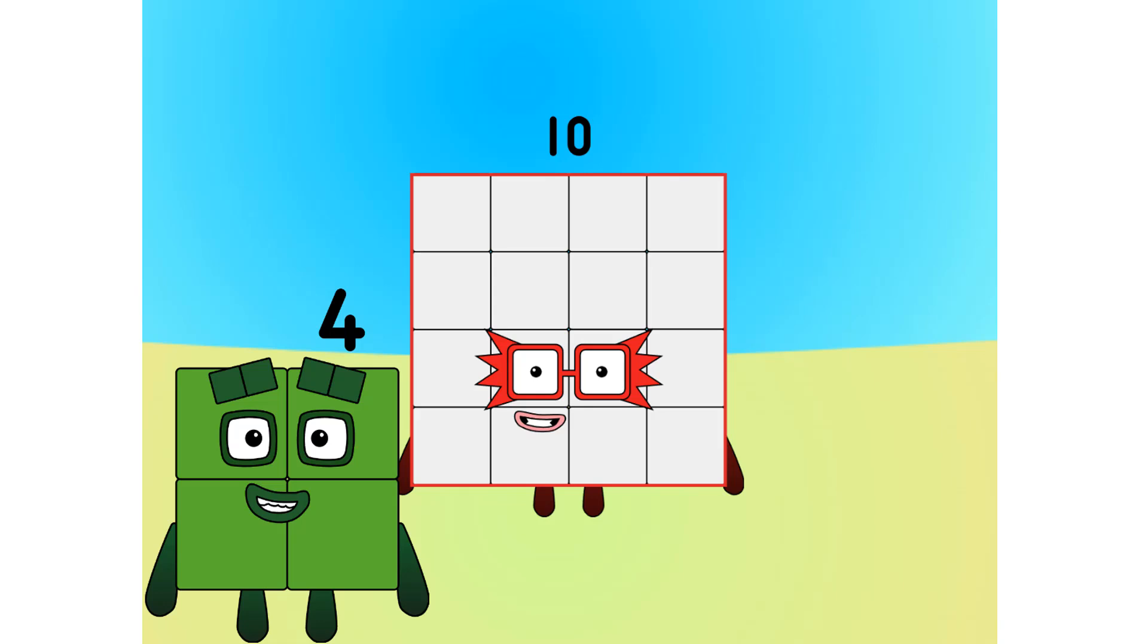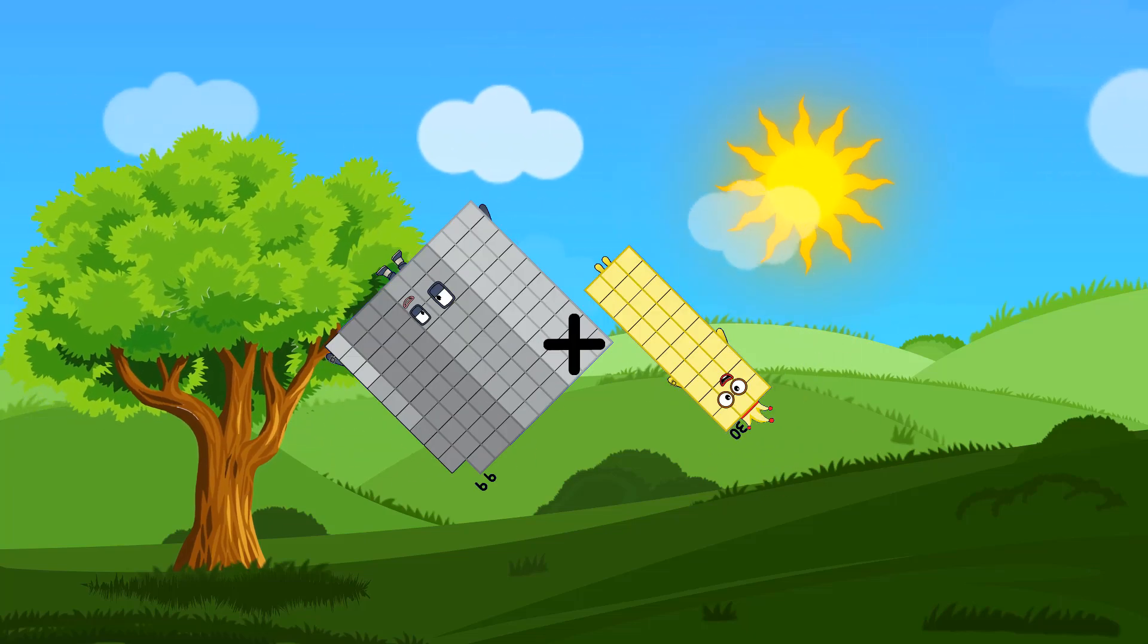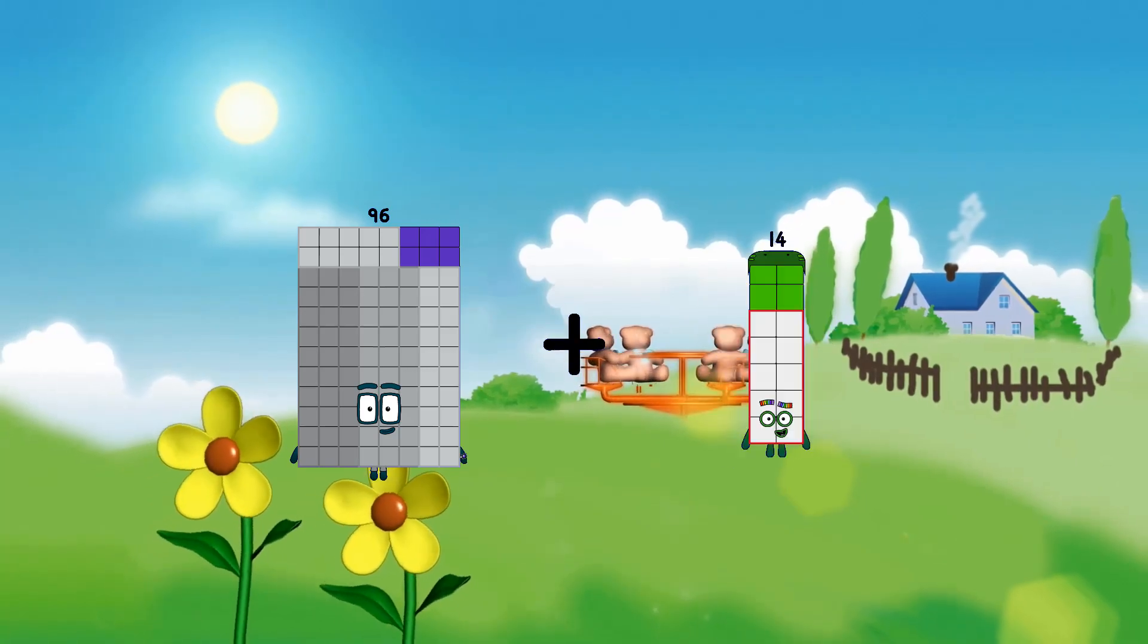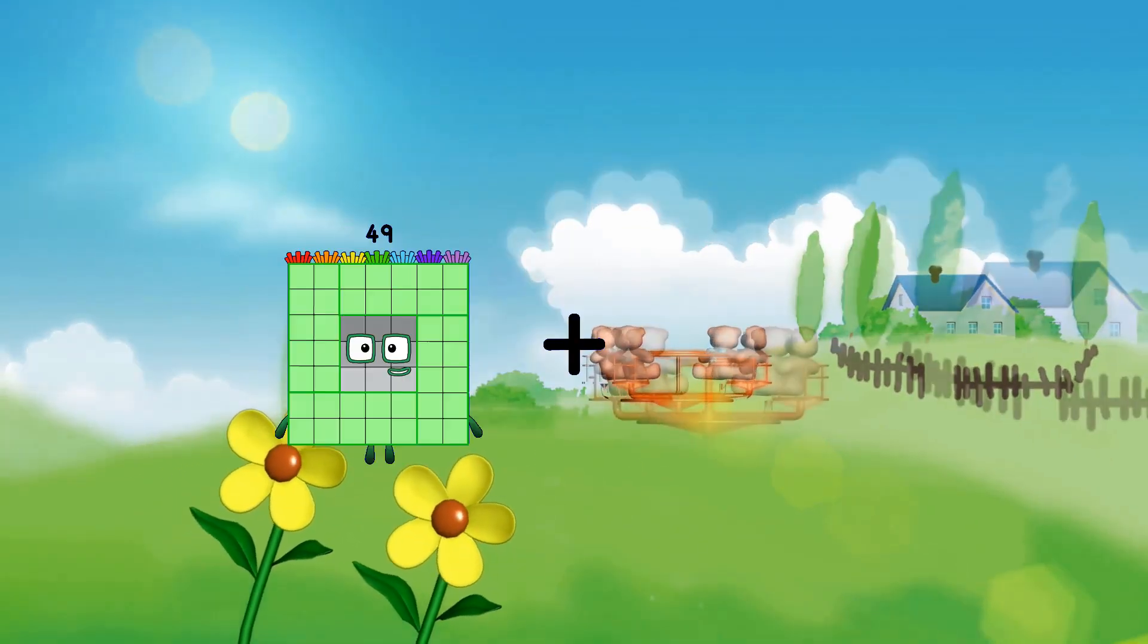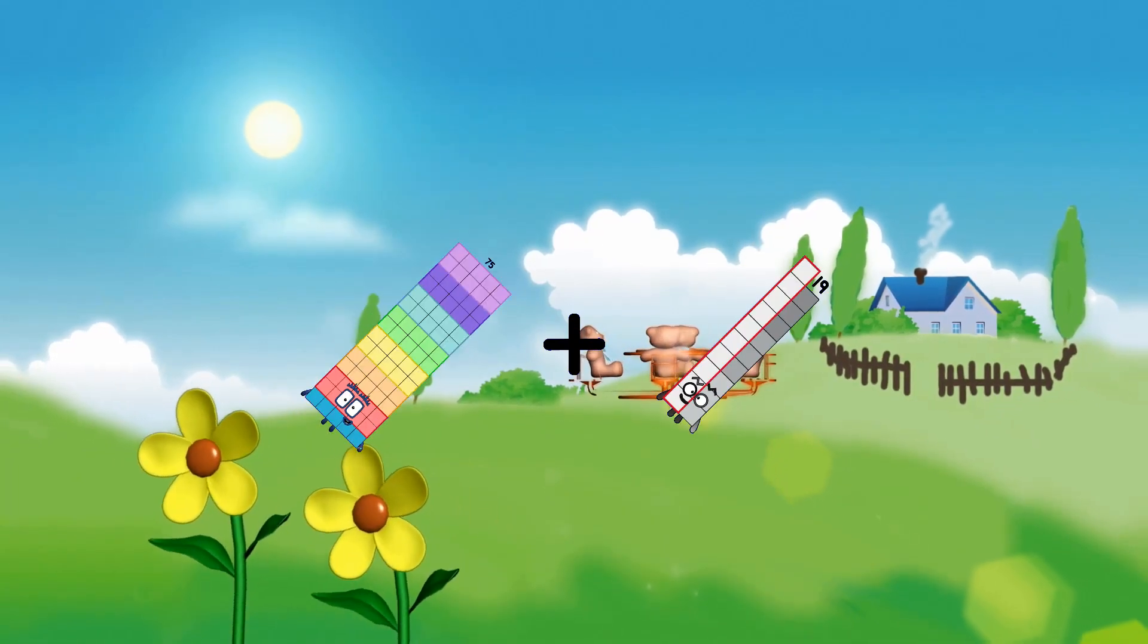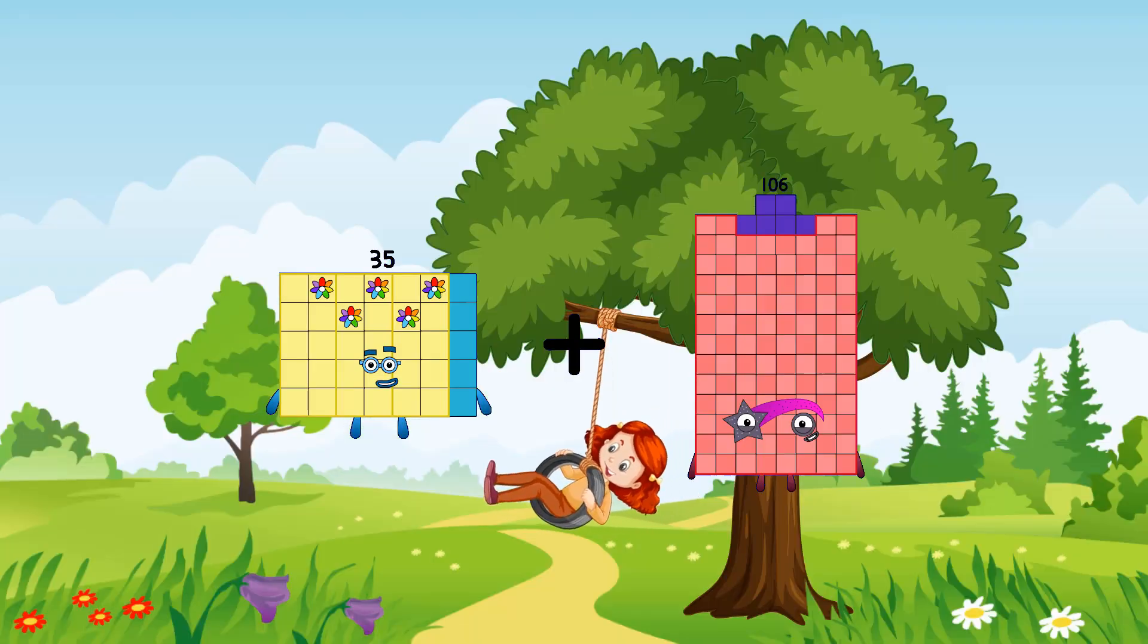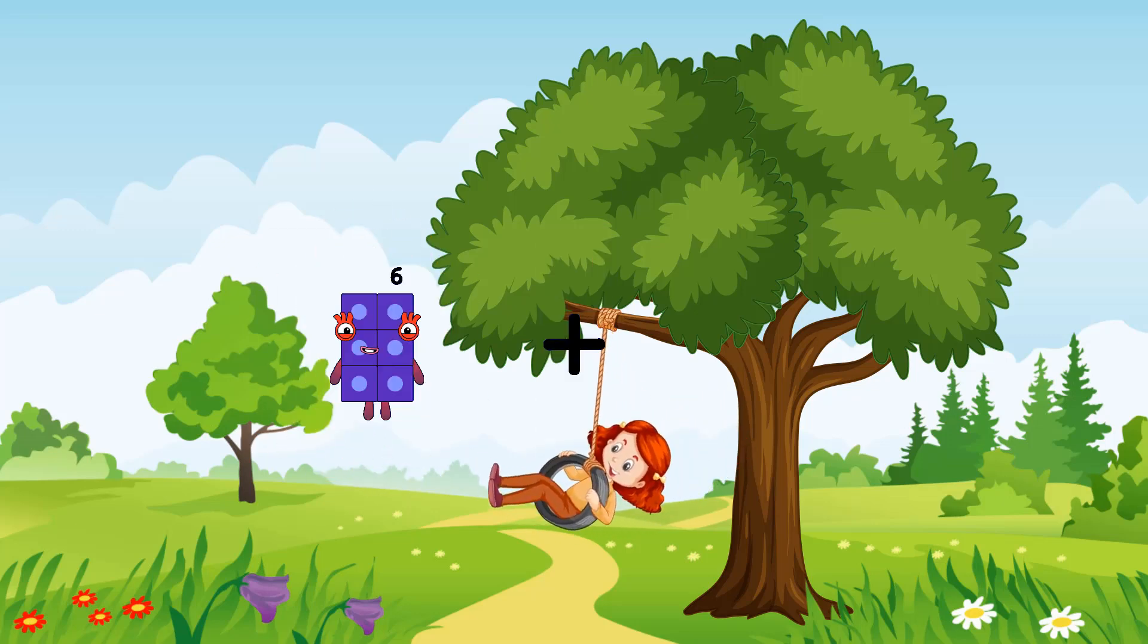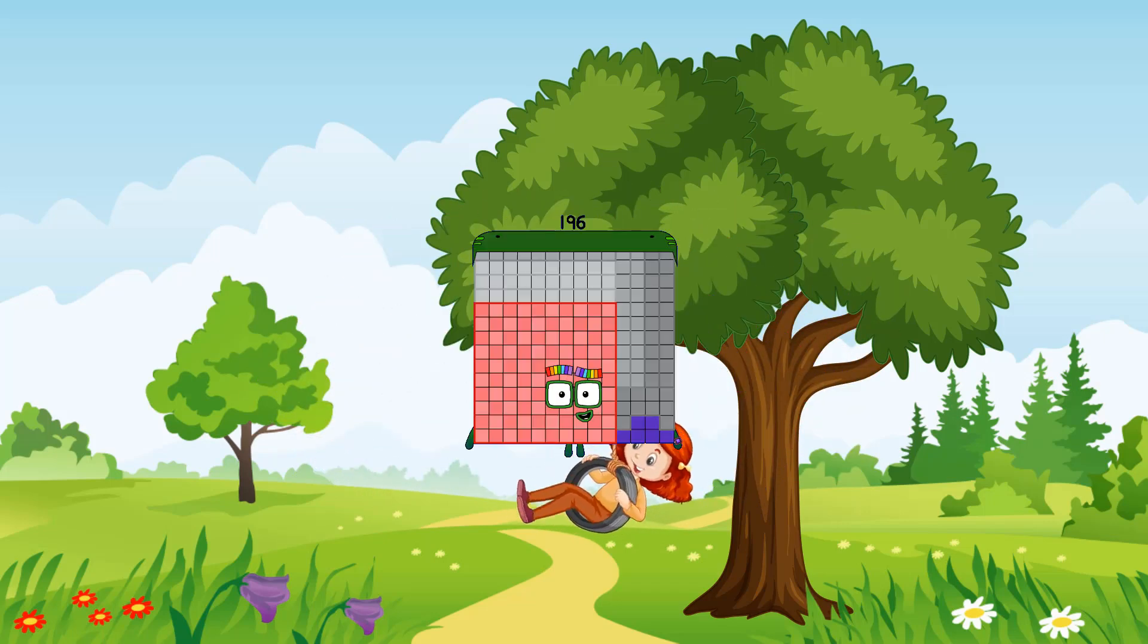99 plus 30 equals 129. 96 plus 82 equals 178. 75 plus 19 equals... 35 plus 50 equals 85. 91 plus 105 equals 196.